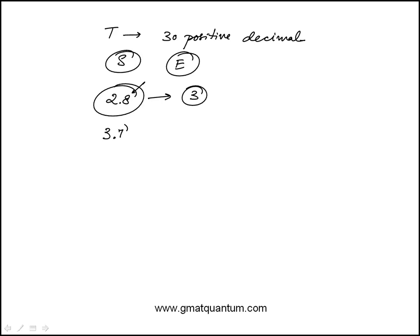If it was odd, say 3.7, that would be rounded down to 3.